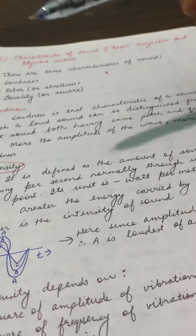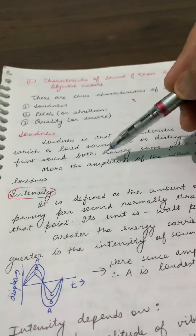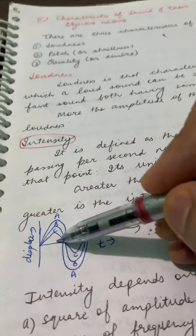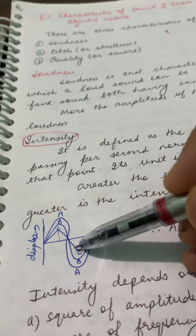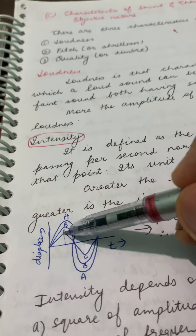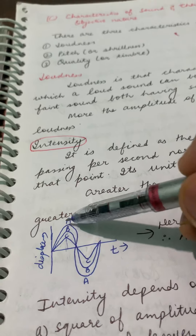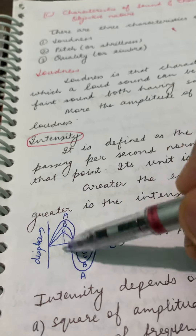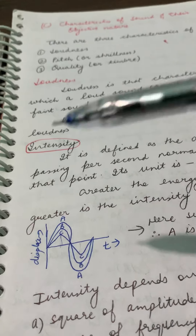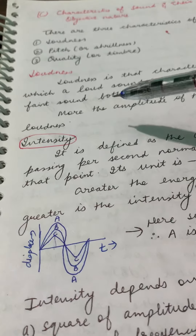The energy carried by the sound wave is explained by amplitude. Look at the diagram: C has a certain amplitude, B has a certain amplitude, and A has the greatest amplitude. So A is the loudest of all three — A is the loudest.